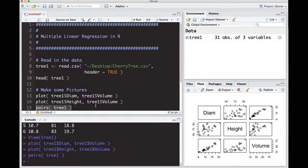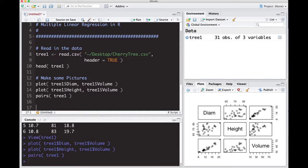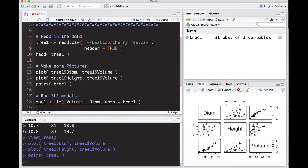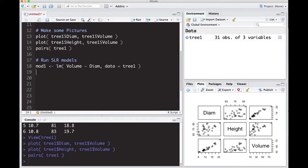Let's first run a simple model, so run simple linear regression model. I'm going to call this mod1. I'll do lm, I'm going to have here volume tilde and I'm going to be interested in the diameter first, and our data equals our tree1. Then I'm going to do a summary on mod1.